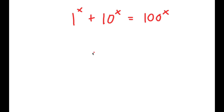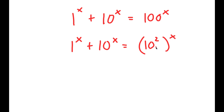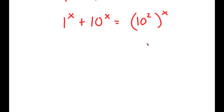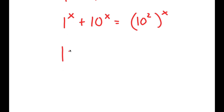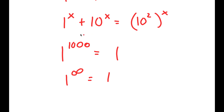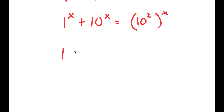To solve this, I'm going to start by rewriting this as 1 to the power of x plus 10 to the power of x is equal to 10 squared to the power of x. Now, 1 to the power of any number — like 1000, or even infinity — is still equal to 1. So no matter what value x could be, 1 to the power of x will always equal 1, meaning we can just say this is 1 plus 10 to the power of x is equal to 10 squared to the power of x.